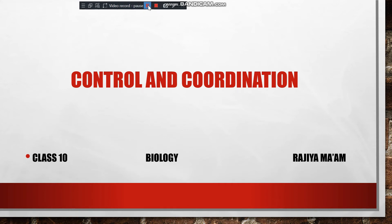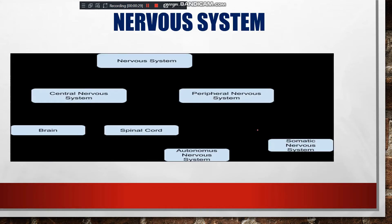Assalamu alaikum and good morning students. It's biology for class 10 and the topic is control and coordination. In your previous class you studied about the structure of the neuron and the function of the different parts of the neuron. In today's class you are going to study about the nervous system.